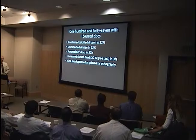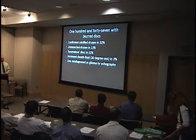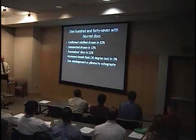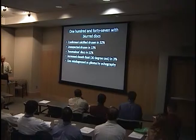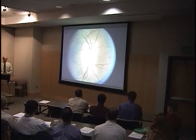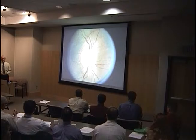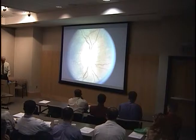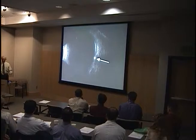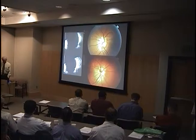Blurred discs: I see many of these, often sent to rule out drusen. I confirmed drusen in 32%, found unexpected drusen in 13% sent as papilledema, anomalous discs in 52%, and a positive 30-degree test in 3% suggesting increased intracranial pressure. With a simple 10-second B-scan, you can pick up drusen quickly and cost-effectively—instead of jumping straight to CT, MRI, neurology referral, or spinal tap.